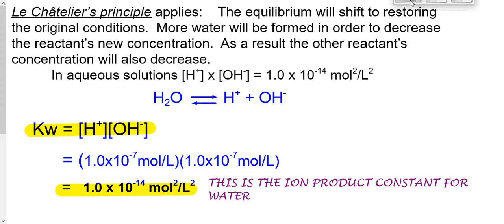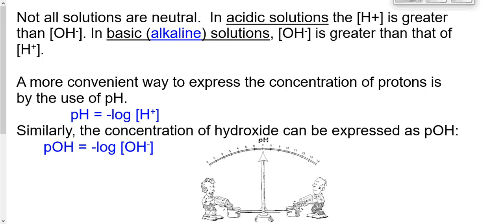Not all solutions are neutral. In an acidic solution, the amount of hydrogen is greater than hydroxide. In a basic (sometimes called alkaline) solution, there are more hydroxides than hydrogens. Either way, the amount of hydrogen times the amount of hydroxide always equals Kw — they must always multiply to give 1×10⁻¹⁴.